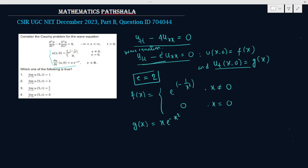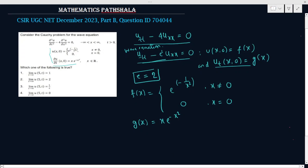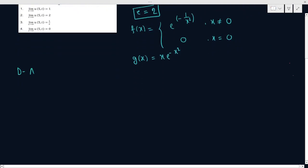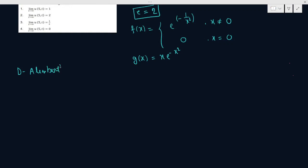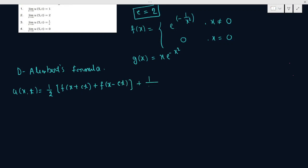To solve this wave equation, we will use d'Alembert's formula. D'Alembert's formula is: u(x,t) equals half of f(x+ct) plus f(x-ct), plus 1 by 2c into the integral over x minus ct to x plus ct of g(s) ds.